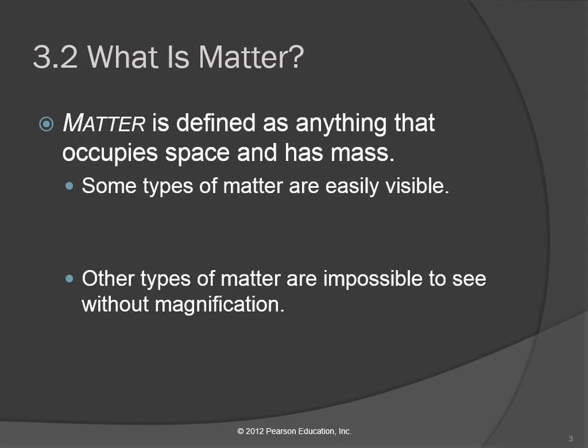What is matter? One way to define matter is it's anything that occupies space and has mass. Occupies space and has mass — so it has mass and volume.